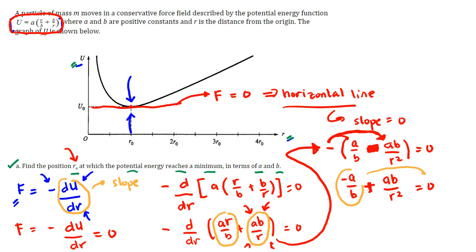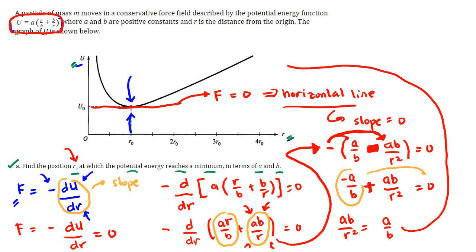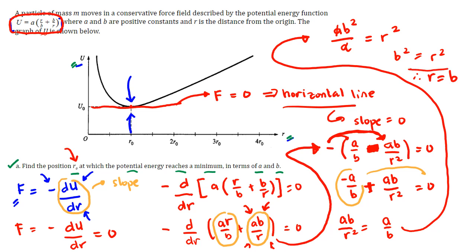Transposing terms, we get AB over R squared equals A over B. Cross-multiplying gives AB squared over A equals R squared, so B squared equals R squared, which means R equals B. So the potential energy reaches its minimum at R sub zero equals B, and this distance on the graph corresponds to the minimum potential energy.